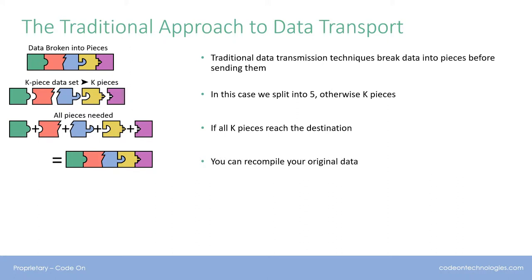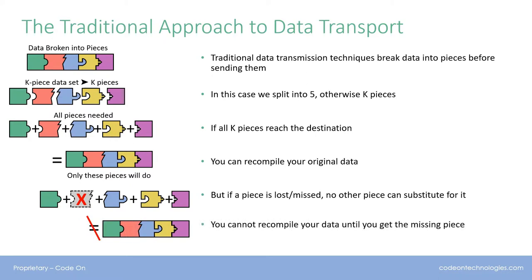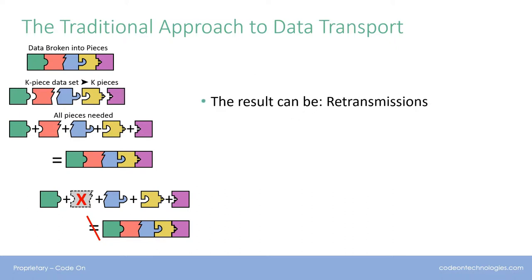But what happens when a piece is lost, or incomplete, or corrupted in transit? Well, you can't recompile and view the original data — at least not until you find a copy of the missing piece from somewhere. As a result of having to deal with these lost pieces, which is more likely than ever in our wireless digital world, we might need retransmissions, which could be expensive for satellites, or deadly for connected cars.